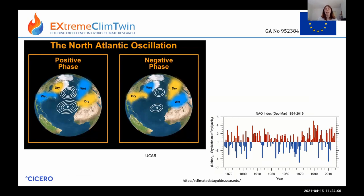Another source of variability is the North Atlantic Oscillation (NAO), which relates to the pressure gradient between Iceland and the Azores. In a positive phase, a strong pressure gradient drives storm tracks further north, making northern Europe wetter and southern Europe drier. In a negative phase, the weak gradient shifts storm tracks south, reversing those patterns. A time series of the NAO shows year-to-year variability as well as longer periods of positive or negative tendency, which affects temperature and precipitation records.